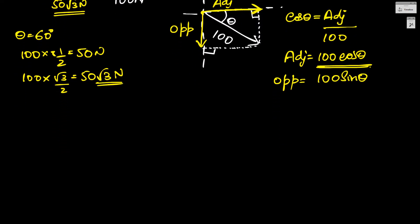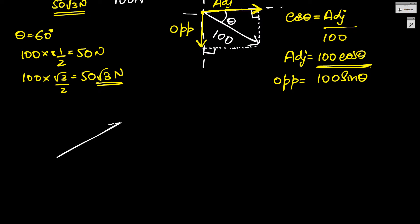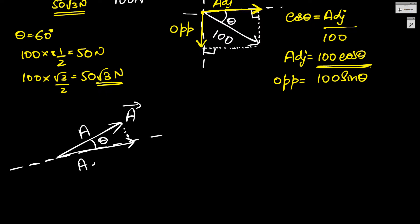So let's understand in general how to calculate the effect of a vector. If you have any vector A with magnitude A, and you want its component along an angle theta, then the component along that direction is always the adjacent side: A cos theta. And the component along the perpendicular side is always A sin theta. This is of utmost importance when we talk about Newton's laws and forces — vector decomposition is one of the most important operations we need to do with vectors.